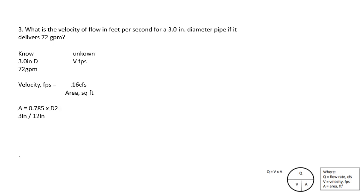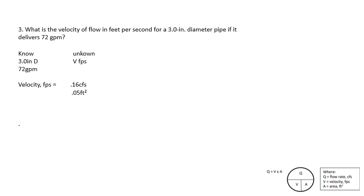Plug 0.16 cubic feet per second into the formula. Now solve for area in square feet: 0.785 times diameter squared. Convert 3 inches to feet by dividing by 12, giving 0.25 feet. So area equals 0.785 times 0.25 squared, which equals 0.05 square feet. Then 0.16 divided by 0.05 gives an answer of 3.2 feet per second.